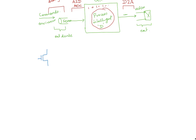A transistor is essentially like a switch. When it's on, current flows through it. When it's off, current does not flow. So there are two states: on and off. All these transistors and their interconnections — combinations of transistors in different topologies — work together to process information: on, off, on, off.